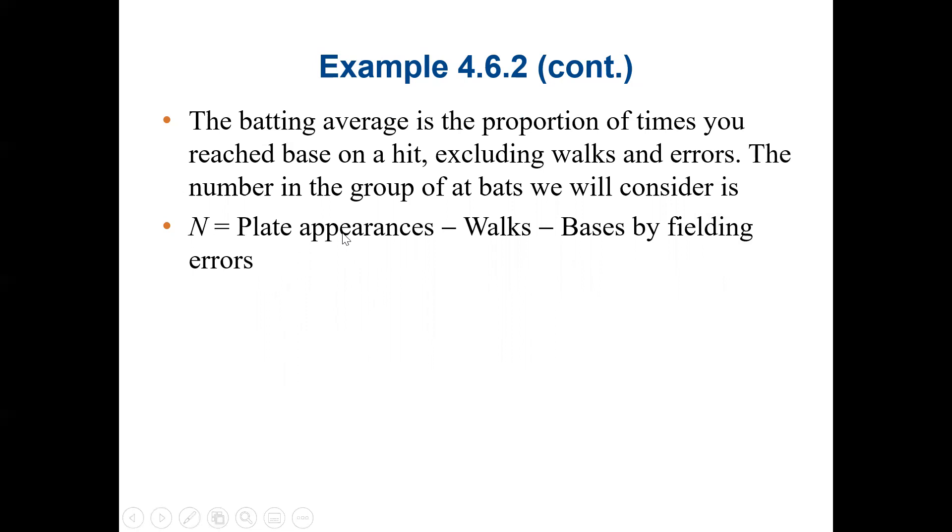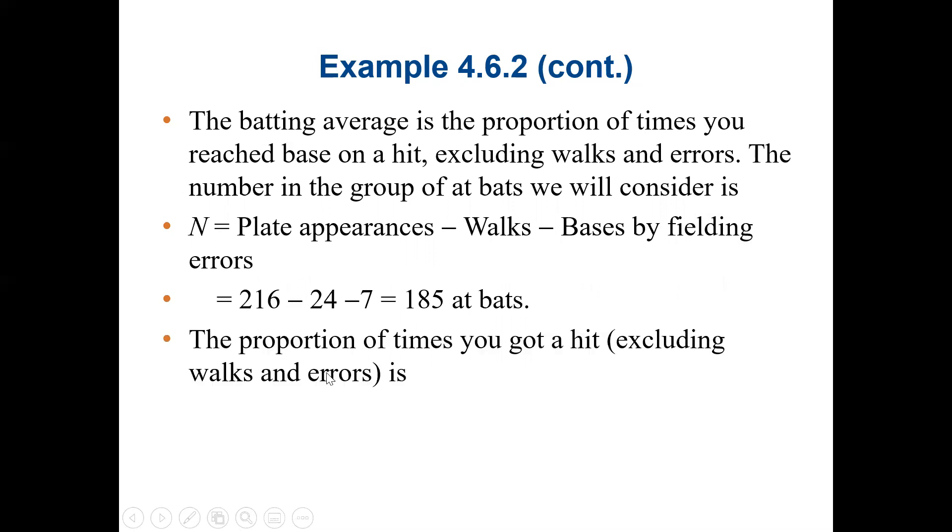This means the number in the group of at-bats we will consider is: N equals the plate appearances minus walks minus bases by fielding errors. So the answer will be 216 minus the walks, 24, and then minus 7. So it's 185 at bats.